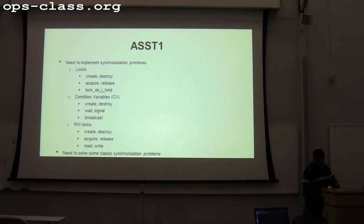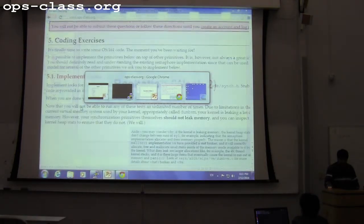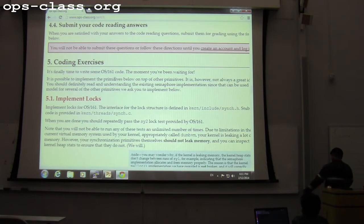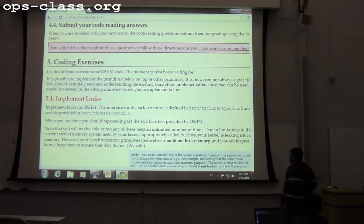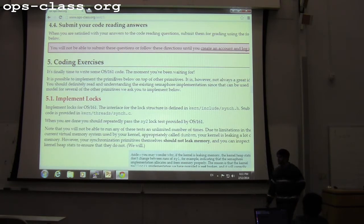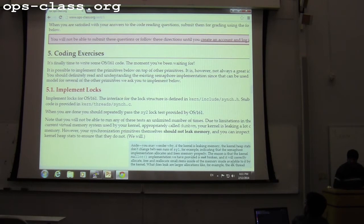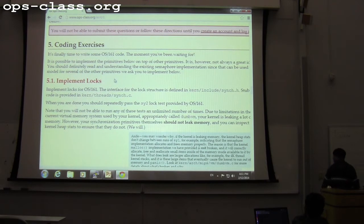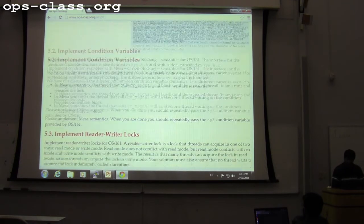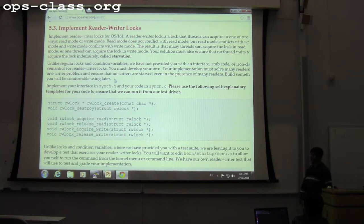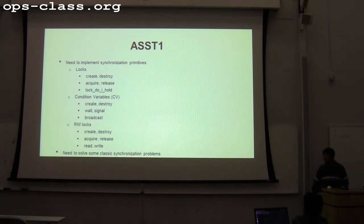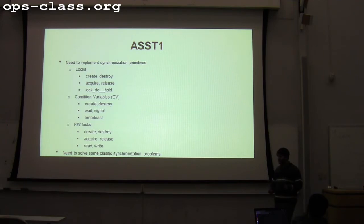Moving on, let's see what needs to be done in assignment 1. If you have questions regarding the code reading, feel free to ask. For the coding exercises, we'll be implementing locks, condition variables, and reader-writer locks, as well as solving two classic synchronization problems. I'll give some examples as to why you need these synchronization primitives, as they haven't been fully covered in class yet.